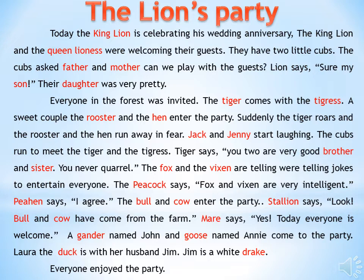The fox and the vixen are telling their jokes to entertain everyone. The peacock says the fox and vixen are very intelligent. The peahen says, 'I agree.' The bull and the cow enter the party. The stallion says, 'Look, the bull and the cow have come from the farm.' The mare says, 'Yes, today everyone is welcome.' The gander named John and the goose named Annie come to the party. Laura the duck is with her husband Jim. Jim is a white drake.